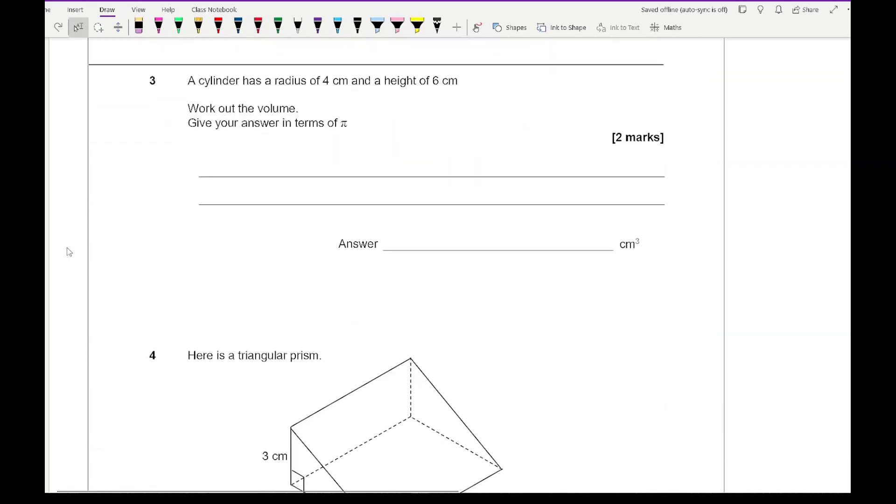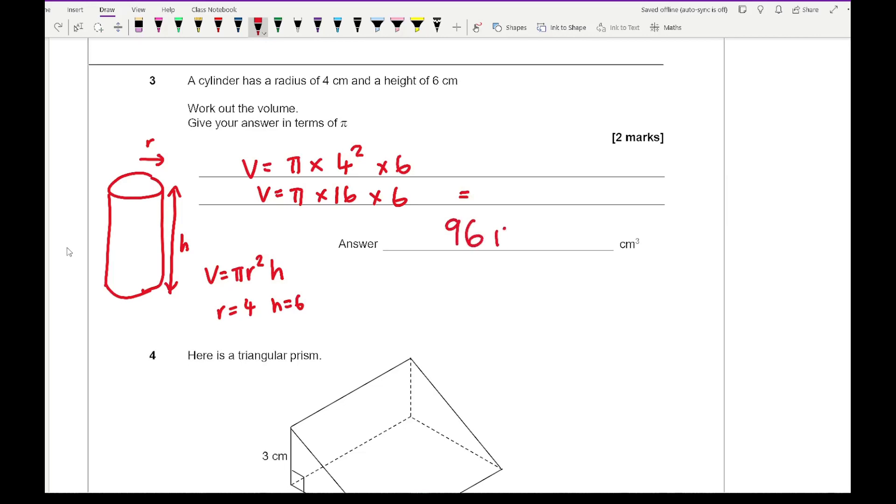Moving on to question 3. It says that a cylinder has a radius of 4 centimetres and a height of 6 centimetres. Work out the volume. Give your answer in terms of pi. This question could easily appear on a non-calculator question because they've asked us to give our answer in terms of pi. Looking at the volume of a cylinder, the volume is pi times r squared times h. So, all I need to do is substitute these two values where r equals 4 and h equals 6. So, the volume is going to be pi multiplied by 4 squared multiplied by 6. So, v equals pi times 16 times 6. And 16 times 6 is going to give me an answer of 96. So, the answer then is 96 pi.